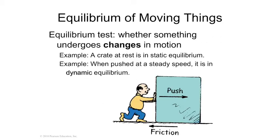So here's just an example: if you push a box and it's not accelerating — it's going at a constant speed — it's still in equilibrium. If the box is simply sitting on the floor, it's also in equilibrium.